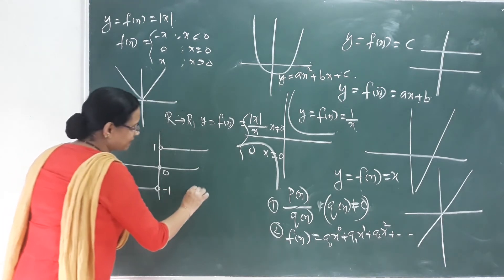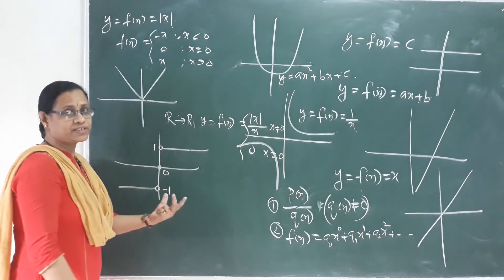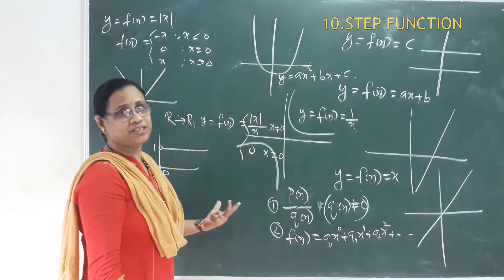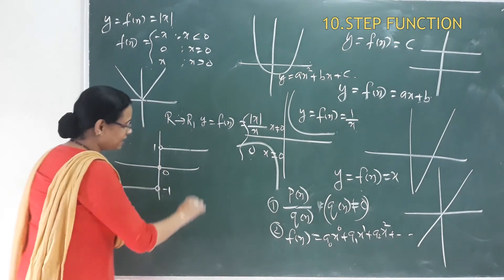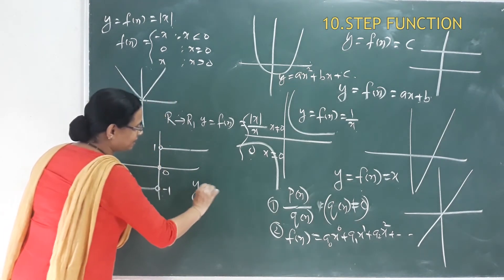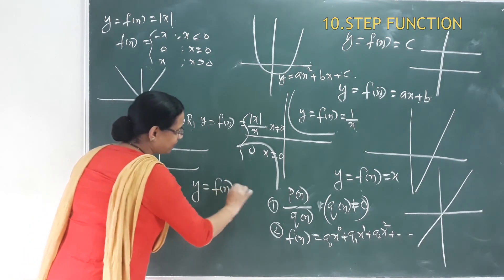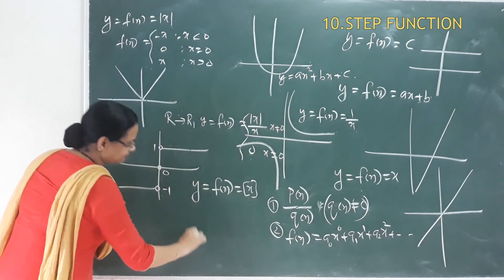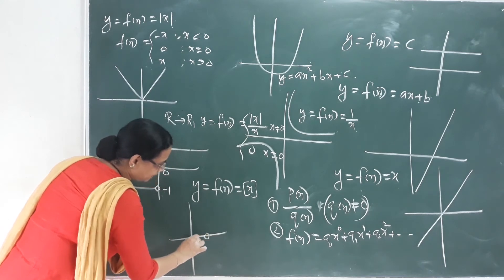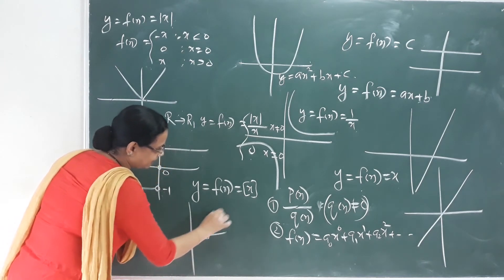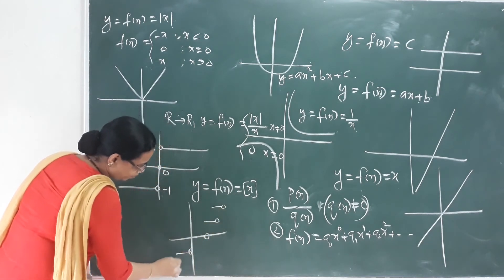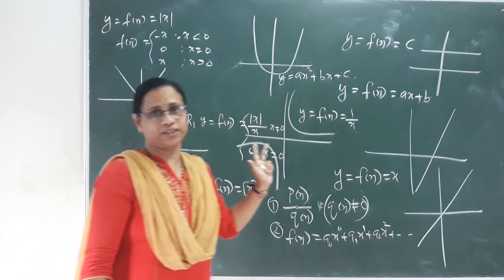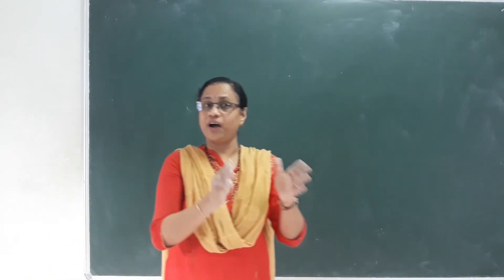The last graph is the greatest integer function, also called the step function, written as y = f(x) = ⌊x⌋ (box x). We have now covered each of these graphs.